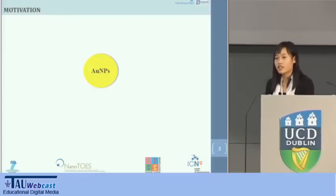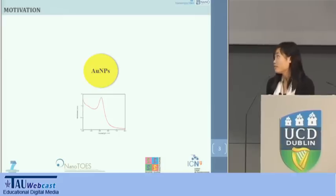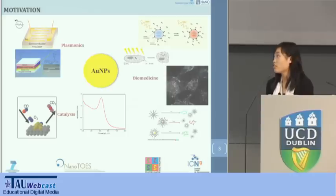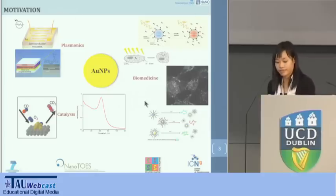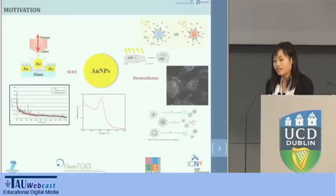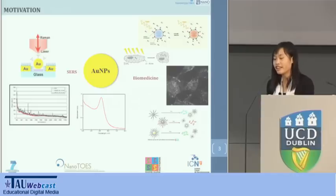It is well known that gold nanoparticles have been used technologically and therapeutically since ancient times. They are now attracting more and more interest because of their unique chemical and physical properties, which arise from a phenomenon called surface plasmon resonance. Due to this property, they are considered good candidates for applications in various fields, namely plasmonics, catalysis, and biomedicine.